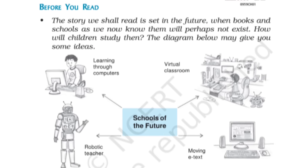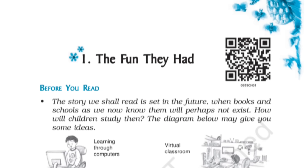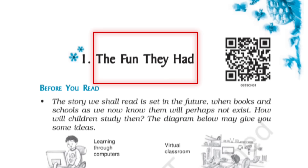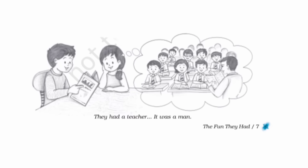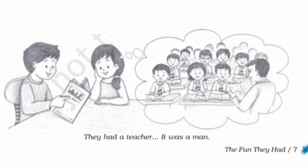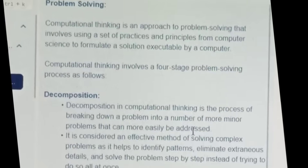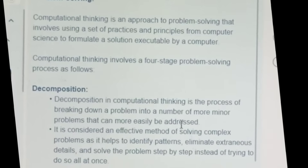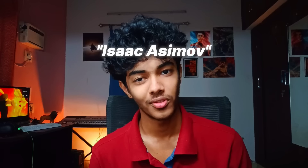There is a lesson in the 9th standard NCERT English book, 'The Fun They Had.' In this book, set in the 22nd century, there is a chance to tell about teaching, learning, and concepts that are digital — you can learn from robots. And who wrote it? It's Isaac Asimov.